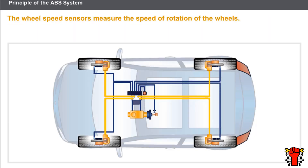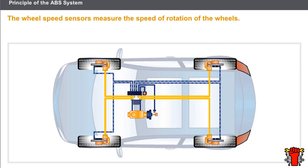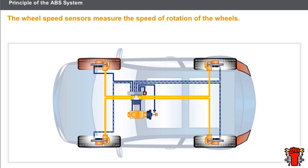The wheel speed sensors measure the speed of rotation of the wheels. The rotating targets generate signals that are read by the sensors. The sensors send these signals to the ABS computer. A rapid drop in speed indicates the start of a wheel locking.